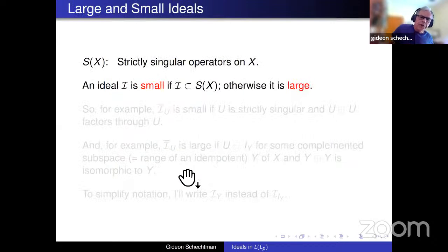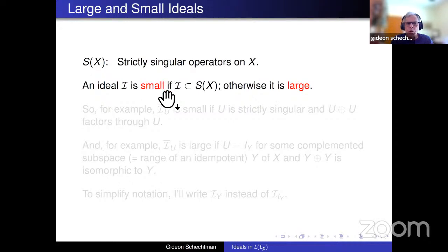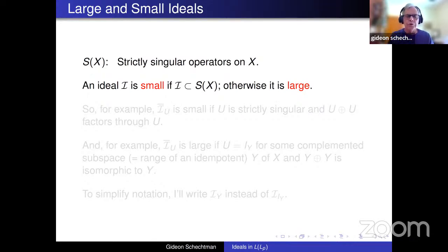I want to make a distinction between small and large ideals. I call an ideal I small if all operators in I are strictly singular — that is, I is contained in S(X), the strictly singular operators. Otherwise I call it large. The rest of this slide gives examples, but I'll leave it for anyone who wants to read it in the recording later.